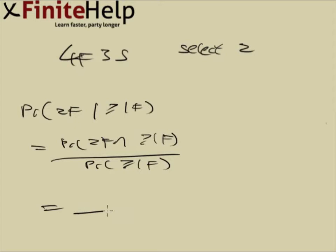Let's look at the bottom first. I always like looking at the bottom first. To have at least one freshman means you have one freshman or two freshmen, and not no freshmen. So I'm just going to take one minus the probability of no freshmen.